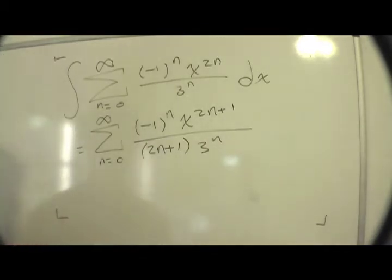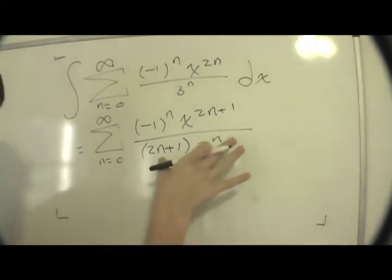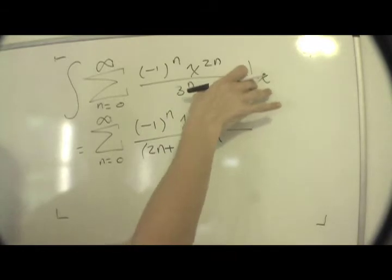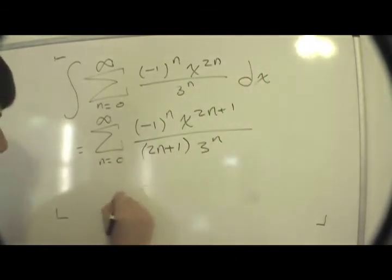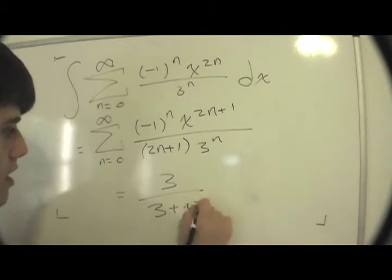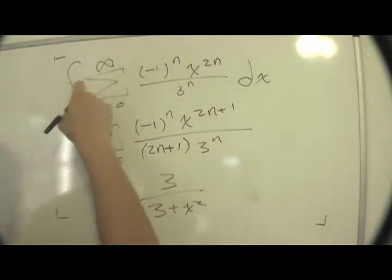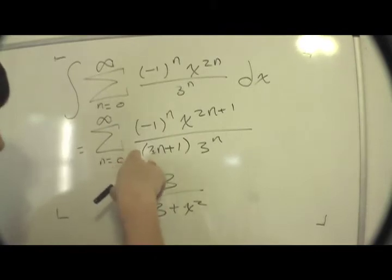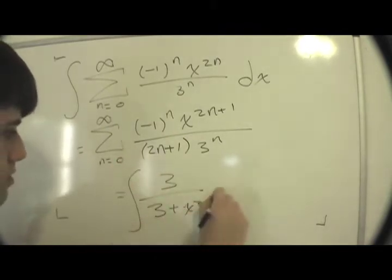So now we have, and then because this thing was originally equal to 3 over 3 plus x squared, well then the integral of this, i.e. this sum, is also going to be equal to the integral of this.